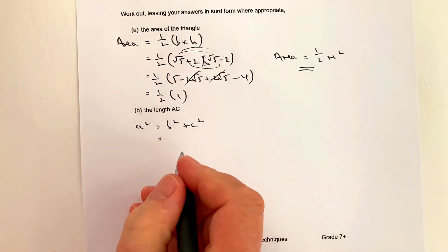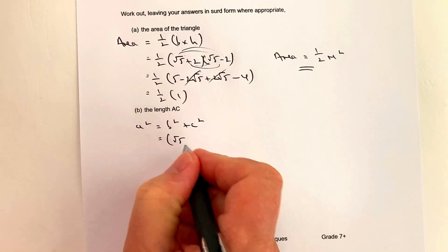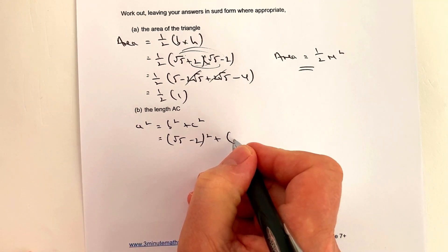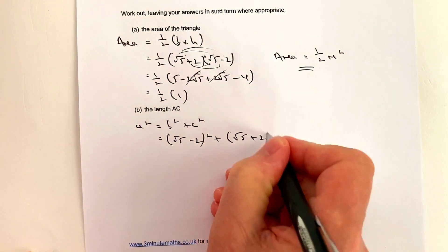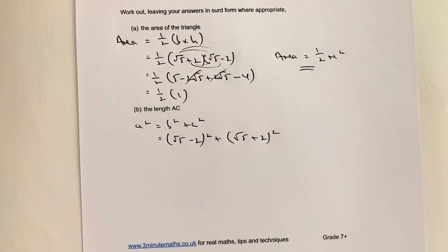So b² is (√5 - 2)² plus c², which is (√5 + 2)². Now it's a case of working this through.